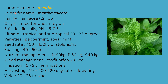The medicinal and aromatic crop mentha has scientific name Mentha spicata, family Lamiaceae. Chromosome number 2n = 36, origin Mediterranean region. Fertile soils are required, pH 6 to 7.5. Climate is tropical and subtropical, 20 to 25 degrees. Varieties are peppermint and spearmint. Seed rate is 400 to 450 kg of stolons per hectare, and spacing is 40 to 60 cm.